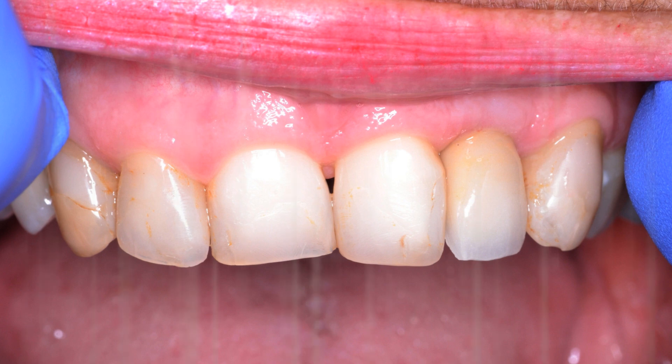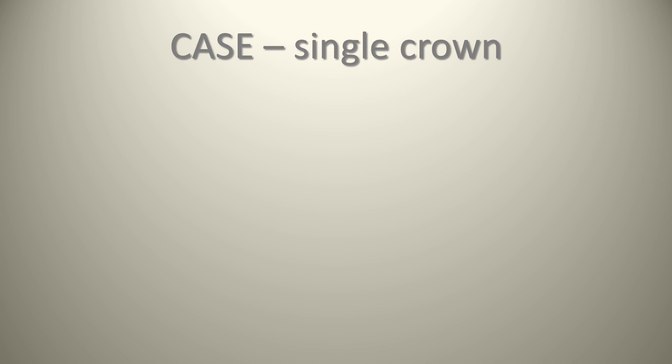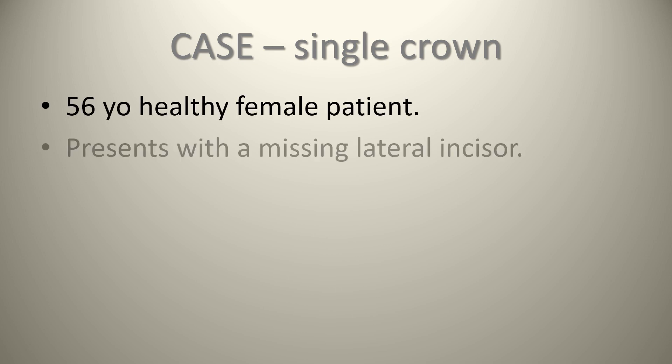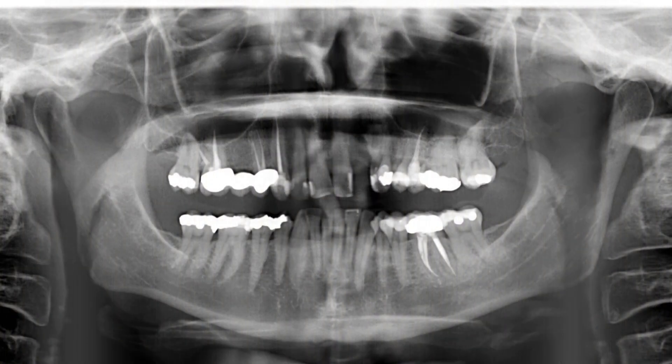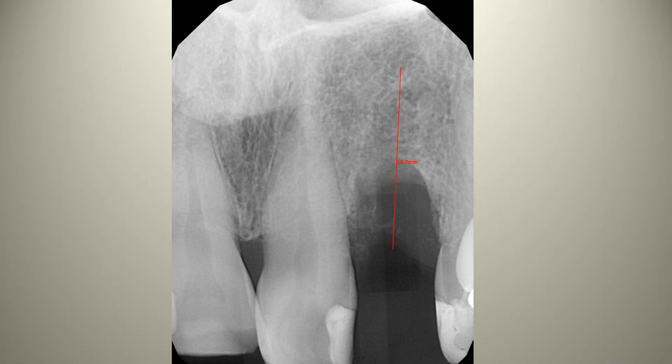This is a 56-year-old healthy female patient presenting with a missing lateral incisor due to a failed endodontically treated tooth. The panoramic radiograph shows adequate height of bone and adequate root form. However, the periapical radiograph reveals a fairly large buccal-lingual bone defect that needs to be addressed. In the approximal area, bone has been maintained, and going back to the studies by Tarnow, as long as the bone is 5 mm from the contact point, the papilla will be maintained — one thing we did not have to be concerned about.